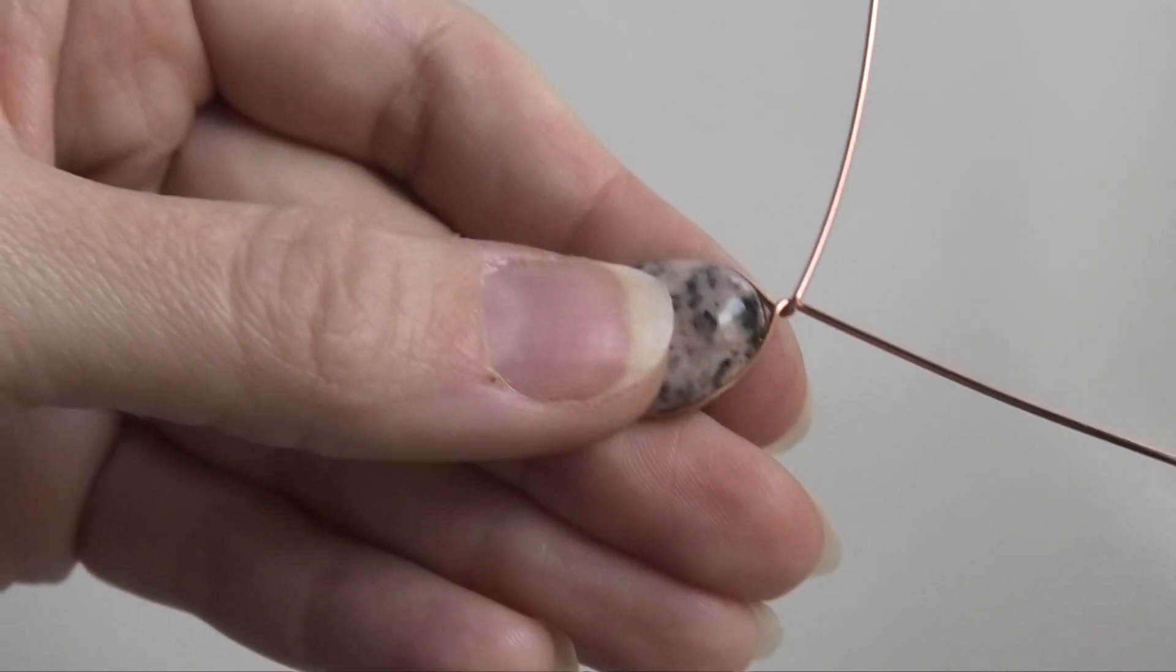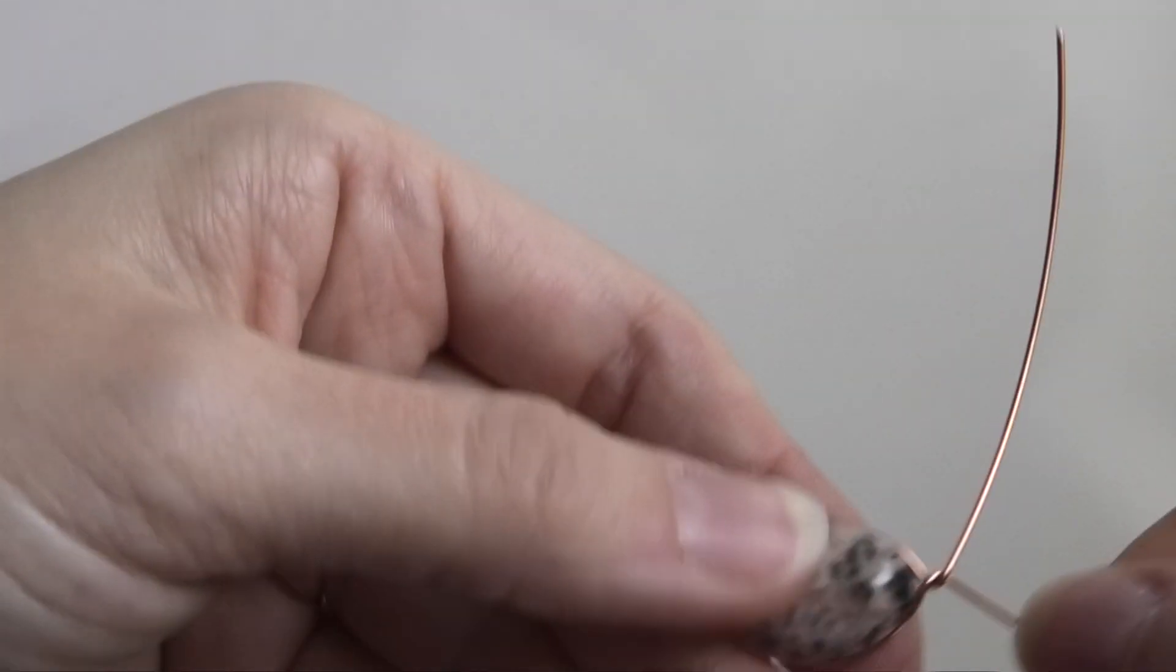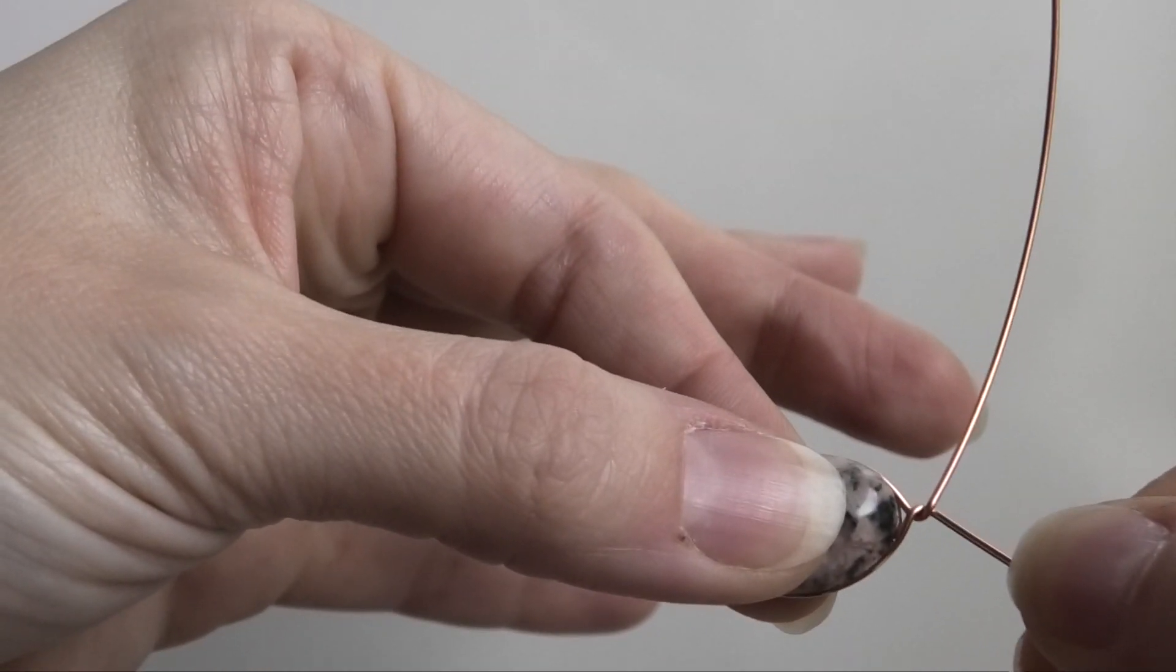Now you can tighten it up with your pliers. The nice thing about the twist is it tightens the wire, so then it feels more secure around the stone.